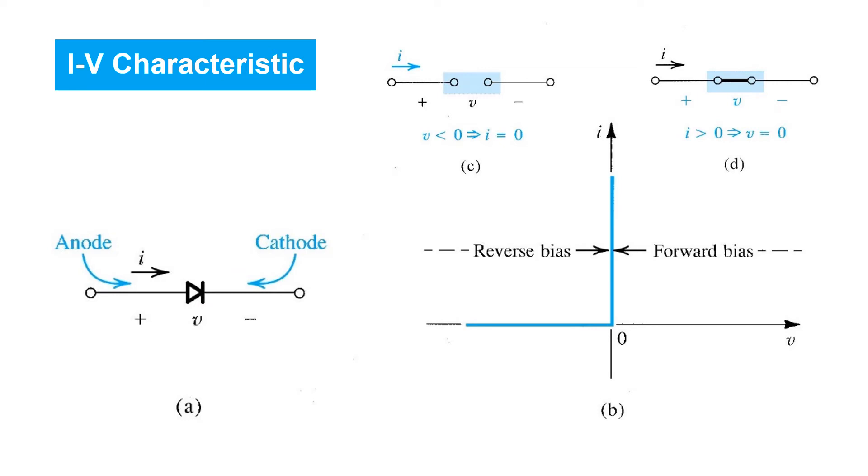Let's begin by considering the idealized voltage current characteristic of a diode. Shown here is the schematic symbol of a diode. As the symbol suggests, the device is asymmetric. That is, unlike a resistor or a capacitor, the polarity with which you connect the device matters.